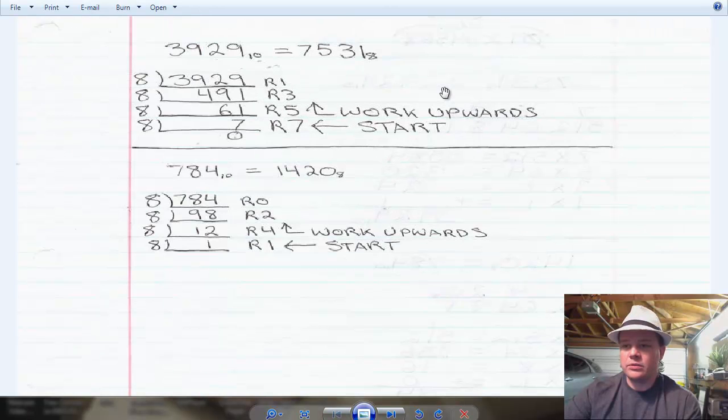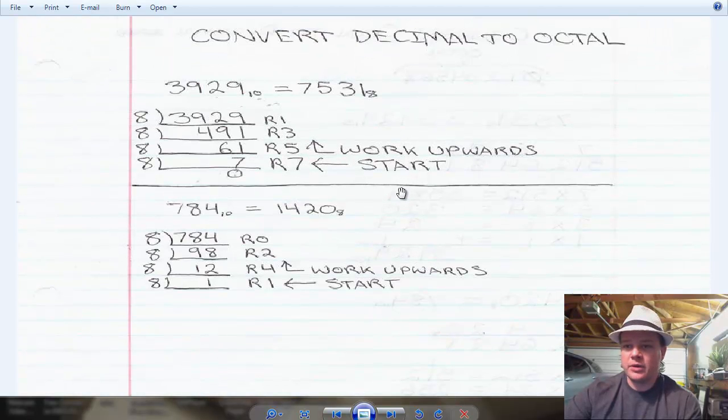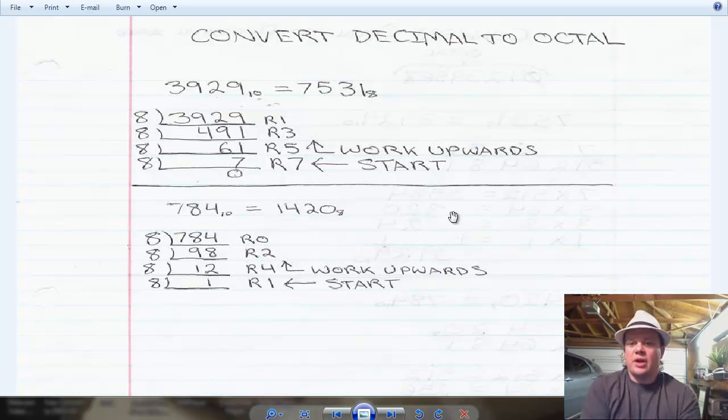Alright, here we go. Let me get this a little bigger. Converting a decimal number to octal. 3929 in decimal is the equivalent to 7531 in octal. What you would do is you take your decimal number and you begin dividing it by the base of the number system that you want to convert it to.